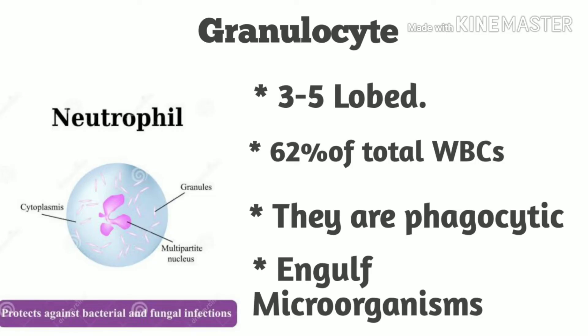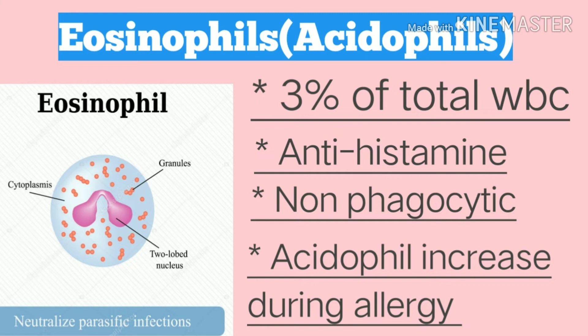Neutrophils consist of 3 to 5 lobes and make up 62 percent of total WBCs. They are phagocytic, meaning they engulf and destroy microorganisms that harm us. Neutrophils also protect against bacterial and fungal infections inside our body.